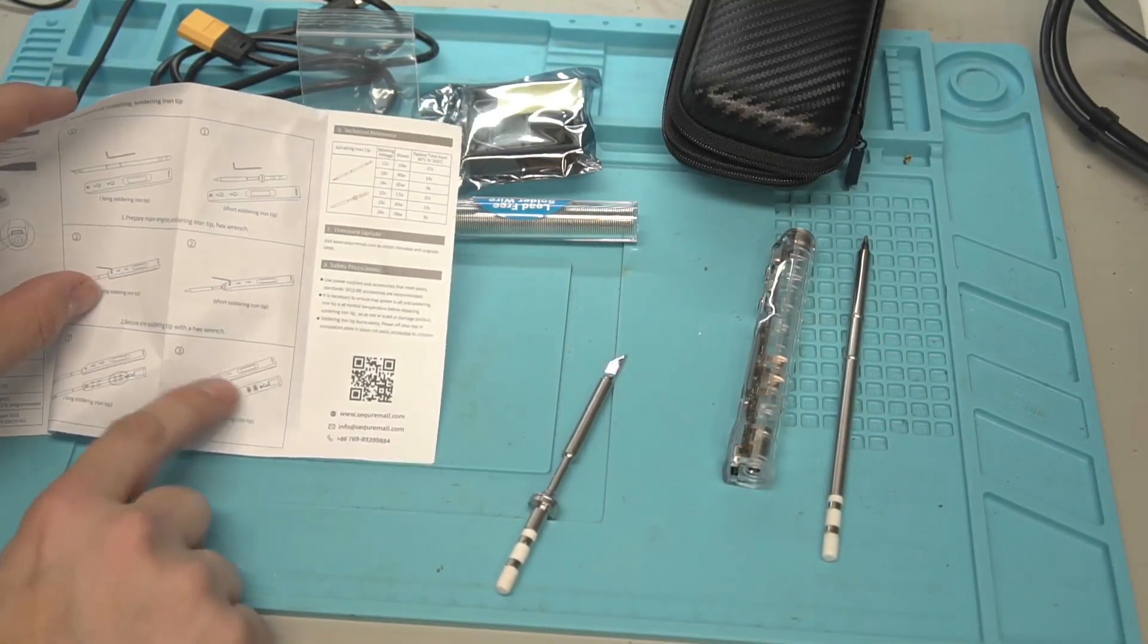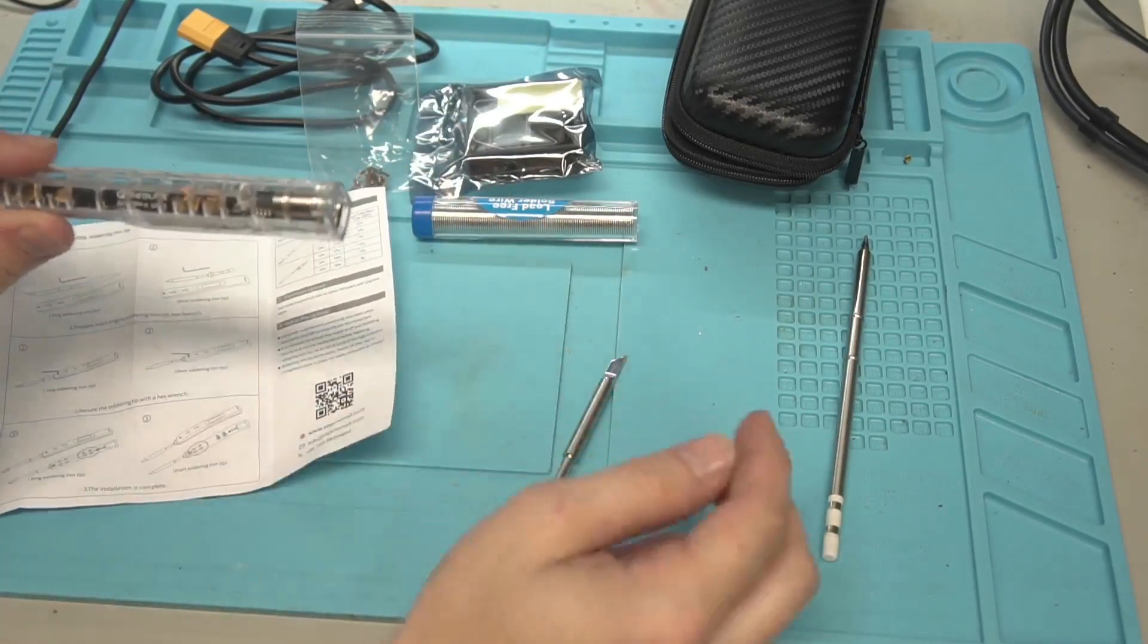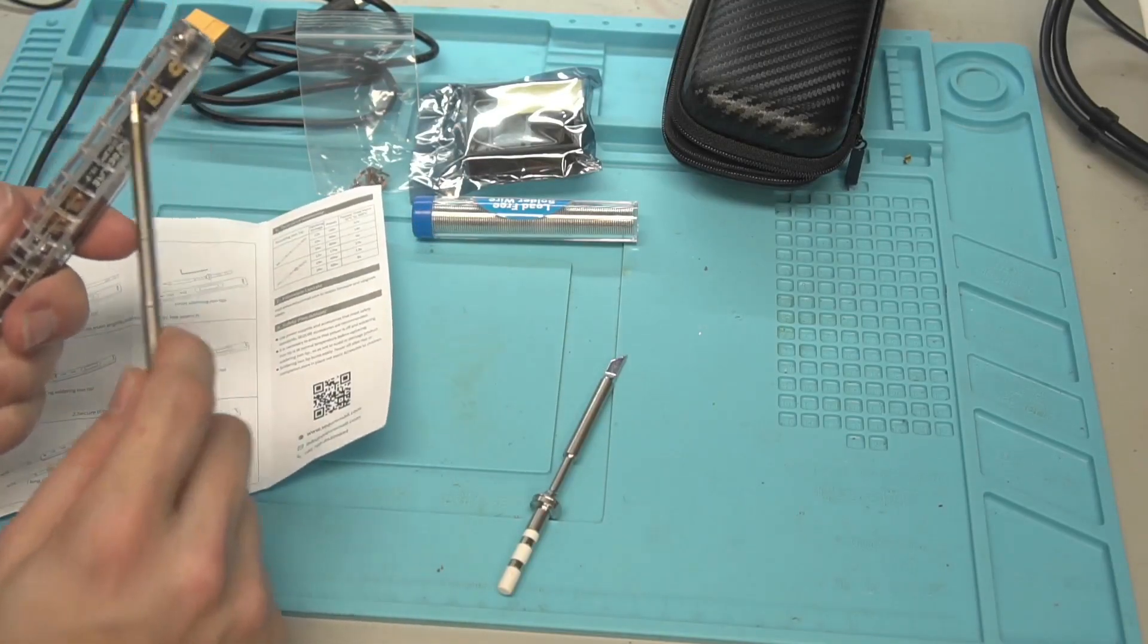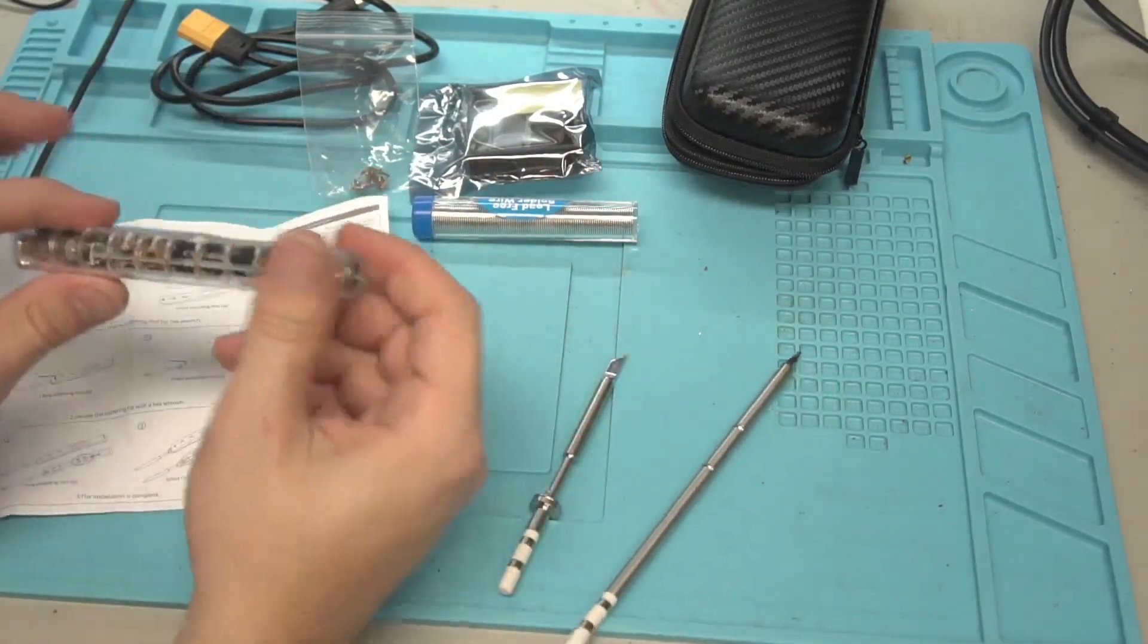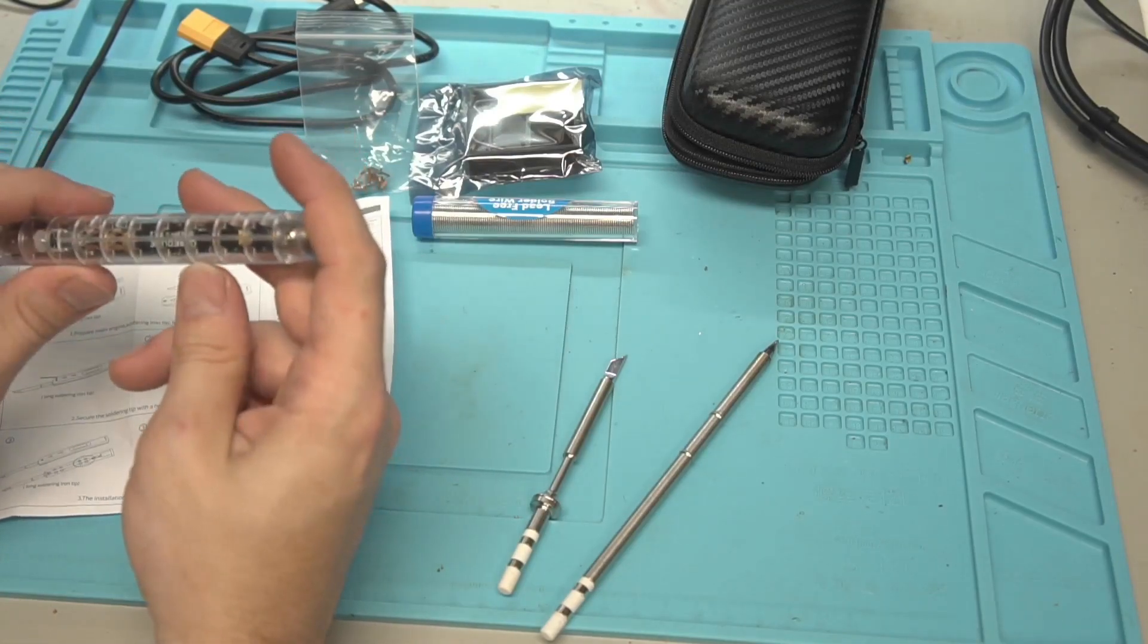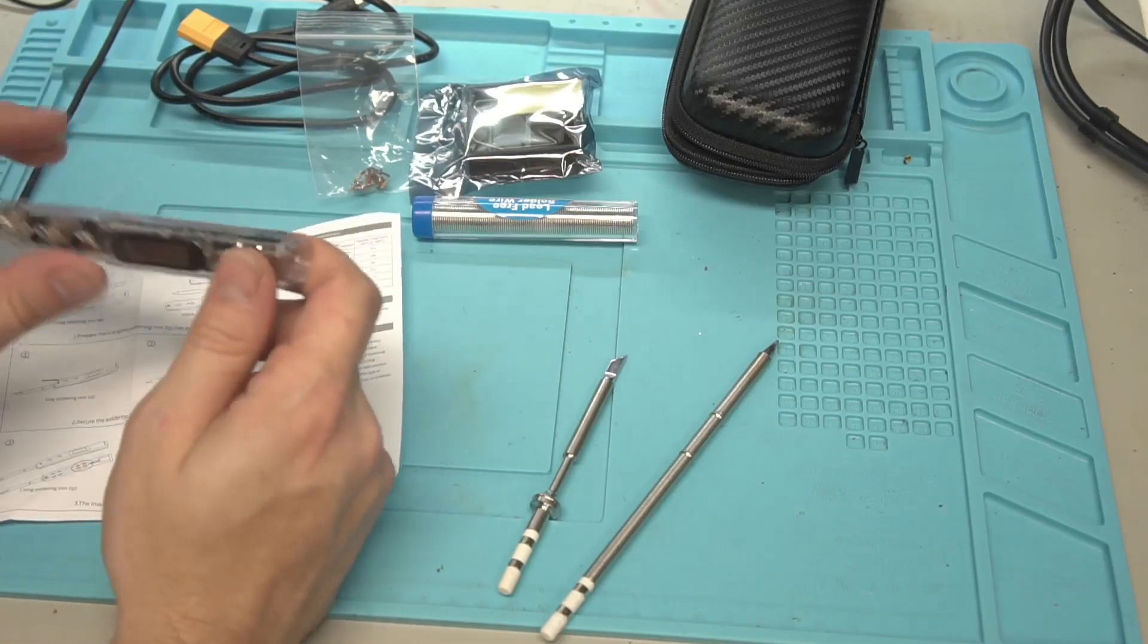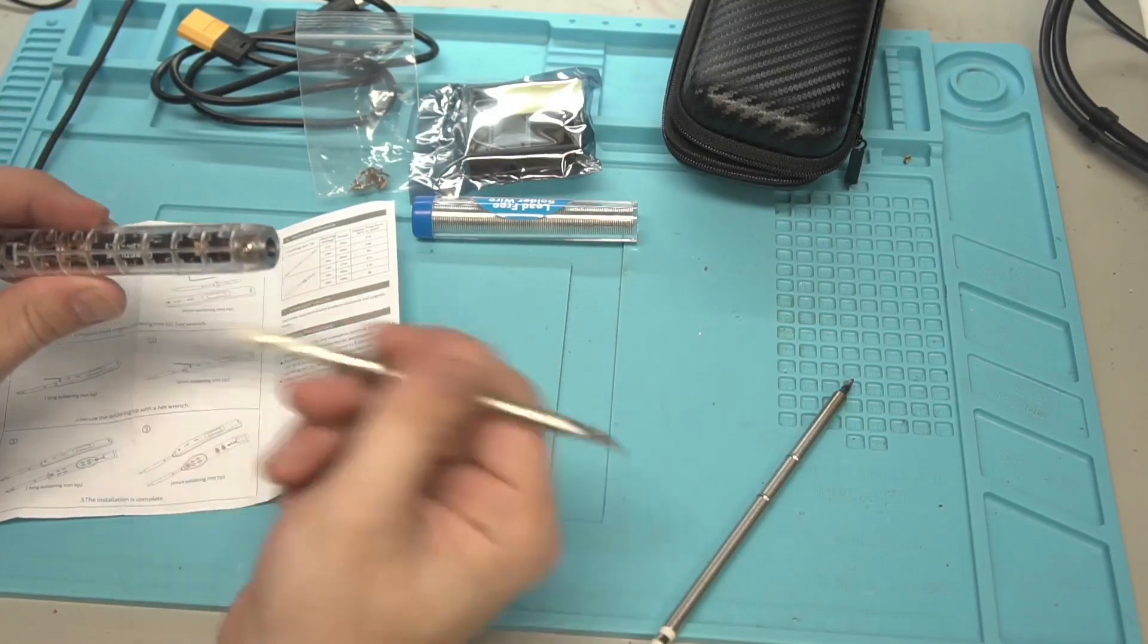It does have instructions about which tip you're going to use, basically telling you if you're going to use the T12, take it apart and take these two out, which is what I already did there. So you're going to take those two out, there's two screws, and then you can use your T12. If you don't and you just put it in there, it just reads a message of short and it won't do anything because you have shorted out those outputs which go to those two terminals there.